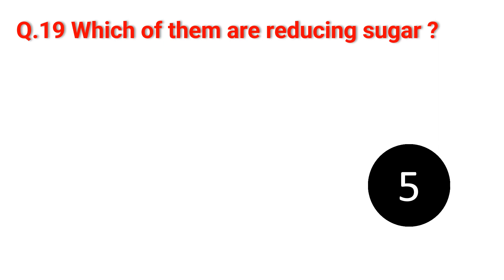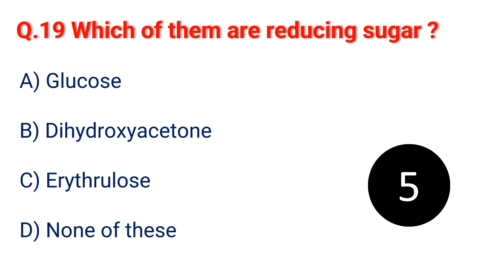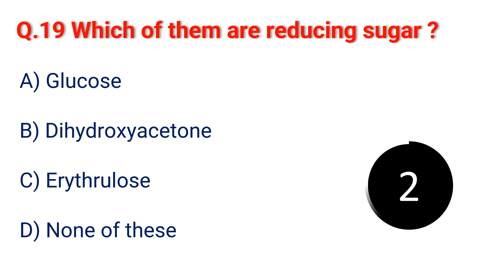Question 19. Which of them are reducing sugars? A. Glucose. B. Dihydroxy acetone. C. Erythrulose. D. None of these. The answer is A. Glucose.